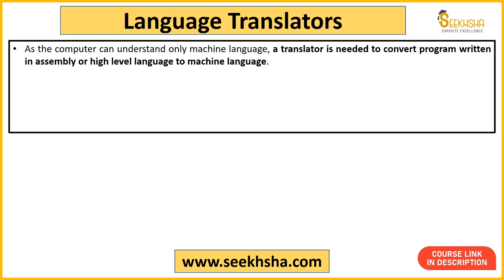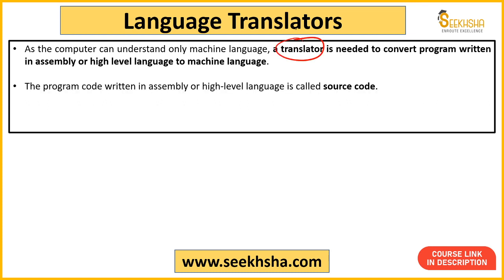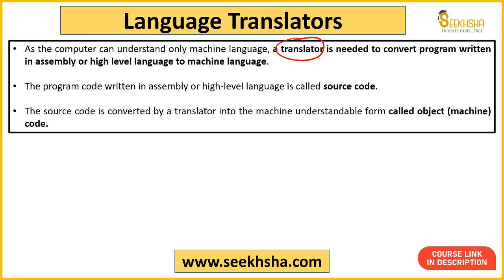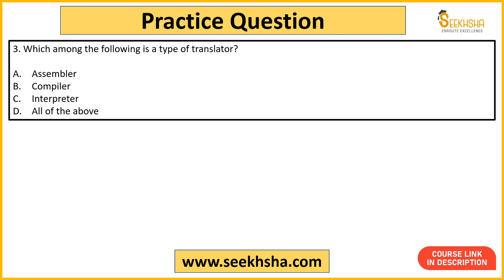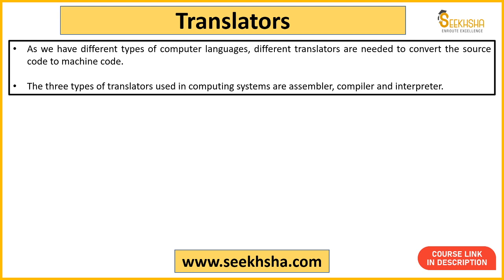Now, the computer understands machine language but we write in high-level or assembly language, so a translator is needed to convert assembly or high-level language into machine language. Question: which among the following is a type of translator? Options: assembler, compiler, interpreter, all of the above. The answer is option D — all of the above. There are three types of translators: assembler, compiler, and interpreter.